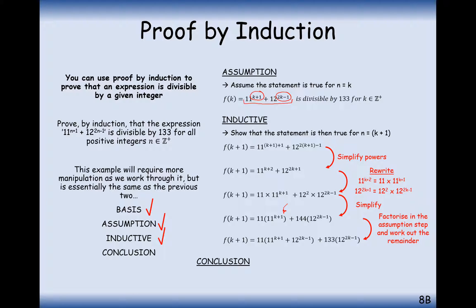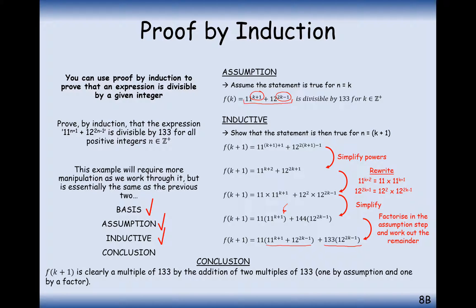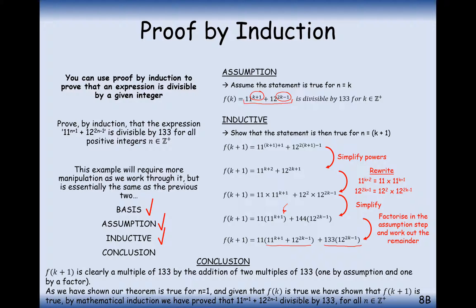Clearly we have our conclusion step: one expression contains the assumption step and is therefore divisible by 133, and the other algebraic term has a clear factor of 133. To conclude: f(k+1) is clearly a multiple of 133 by the addition of two multiples of 133 — one by assumption, one by a factor. As we have shown our theorem true for n equals 1, and given that f(k) is true, we have shown that f(k+1) is true. Therefore, by mathematical induction, we have proved our theorem is true for all positive integers.